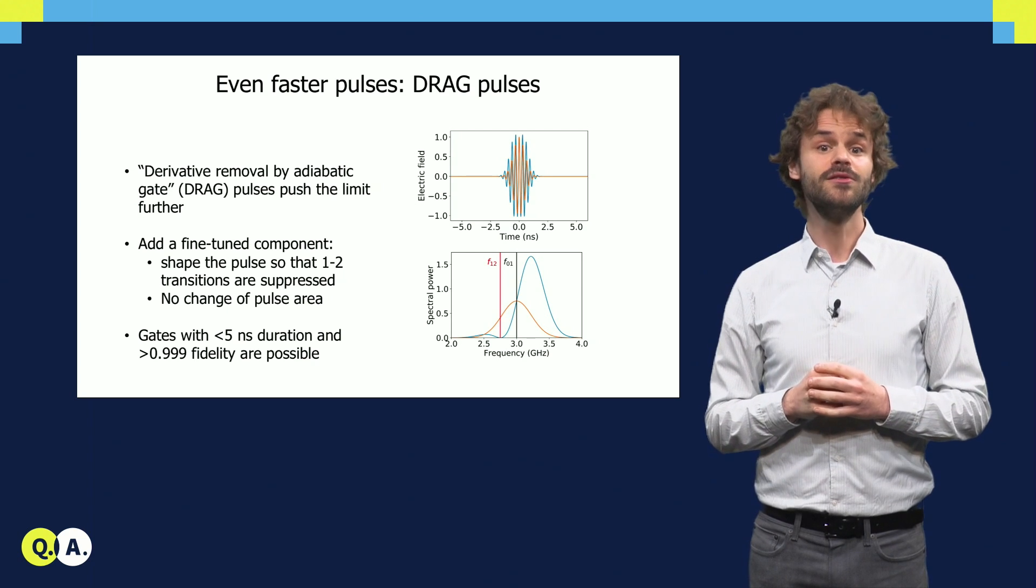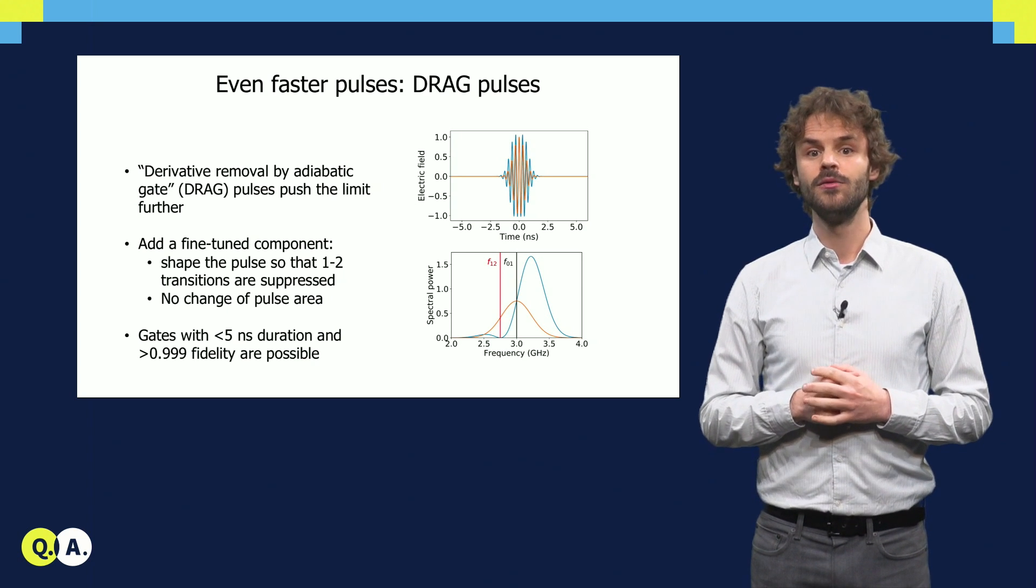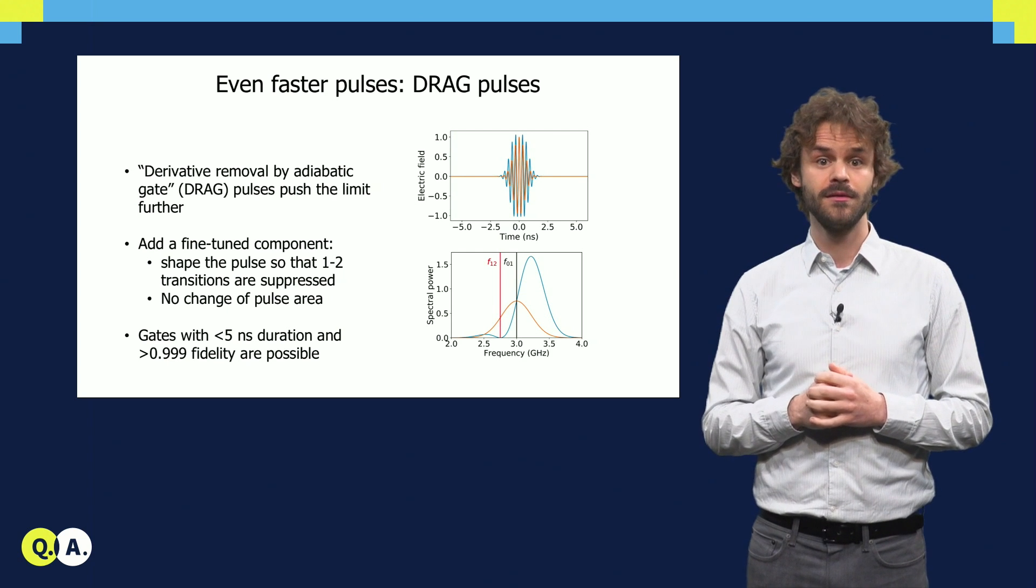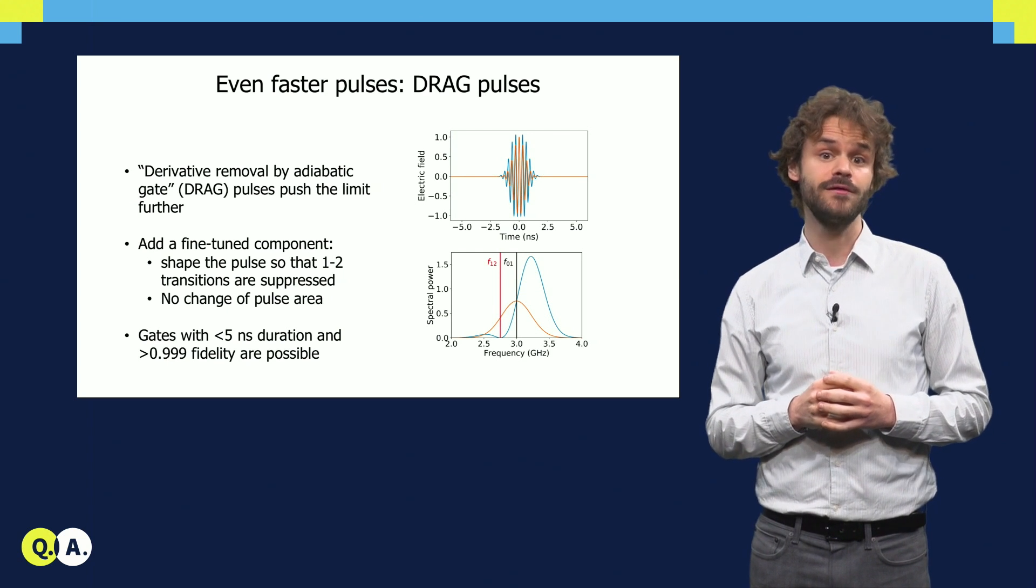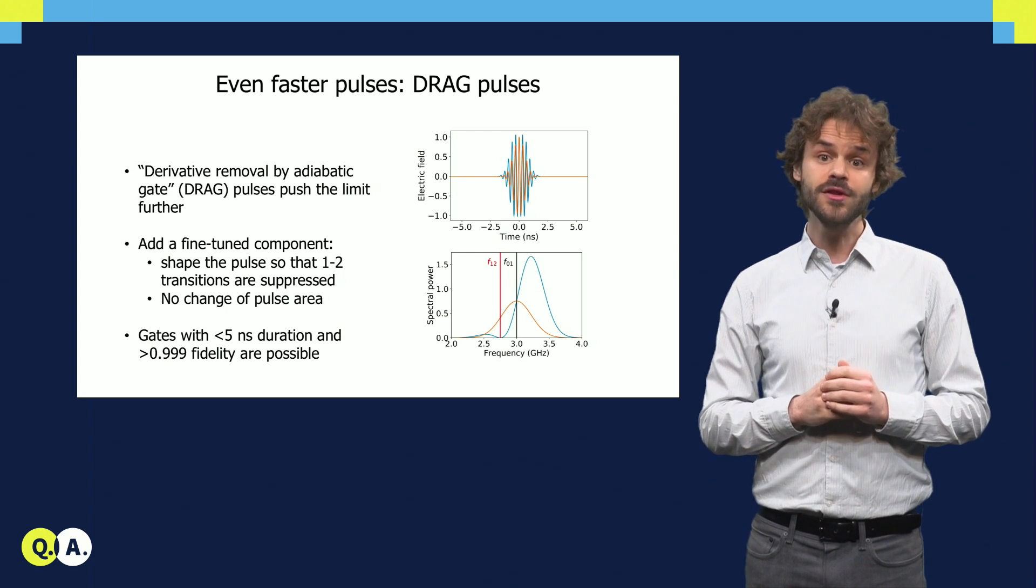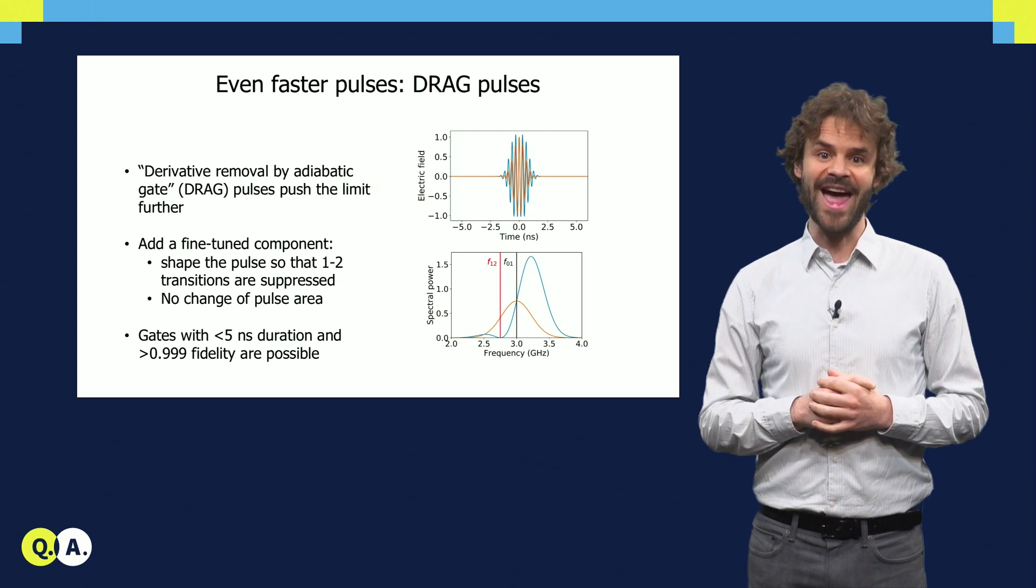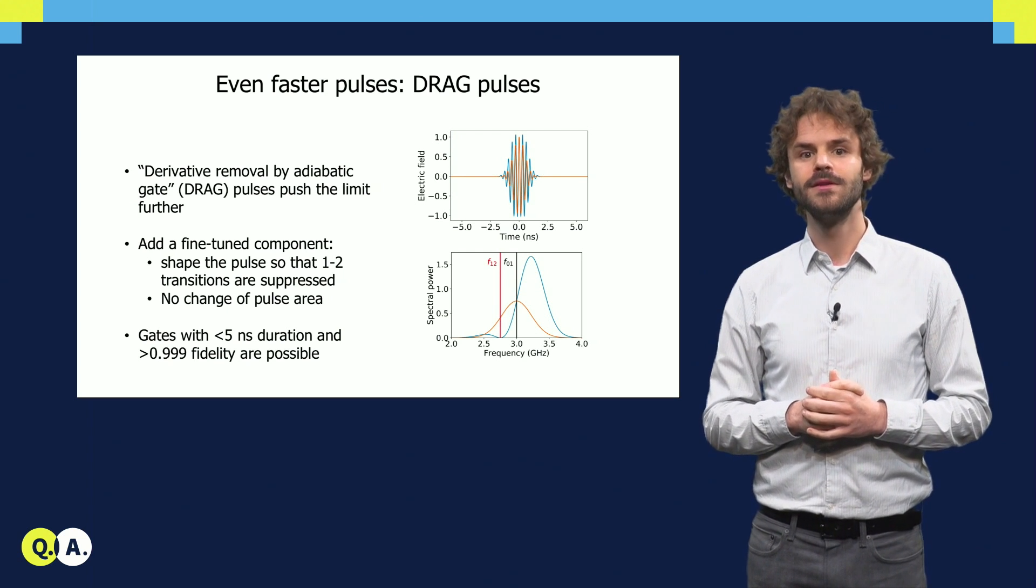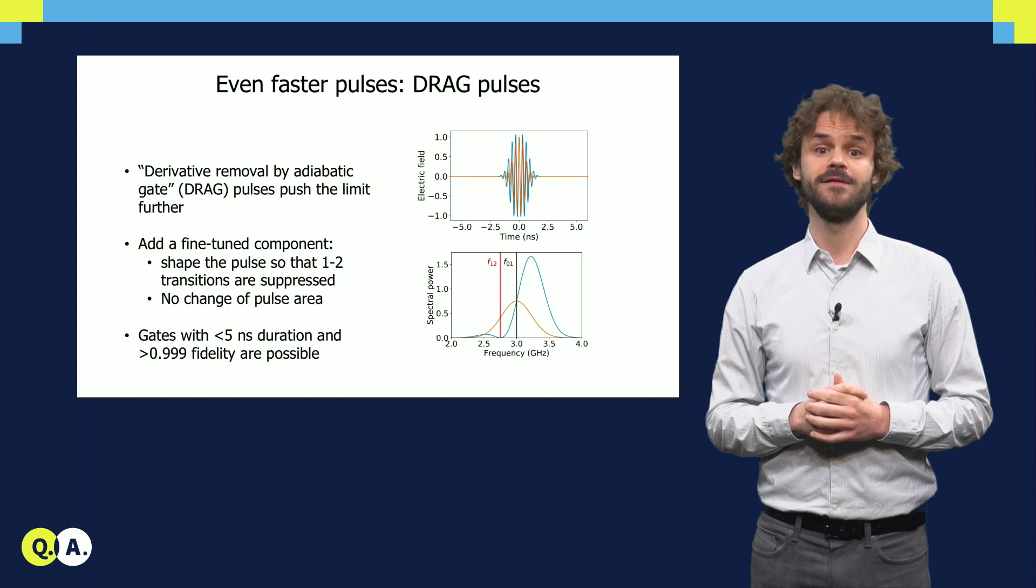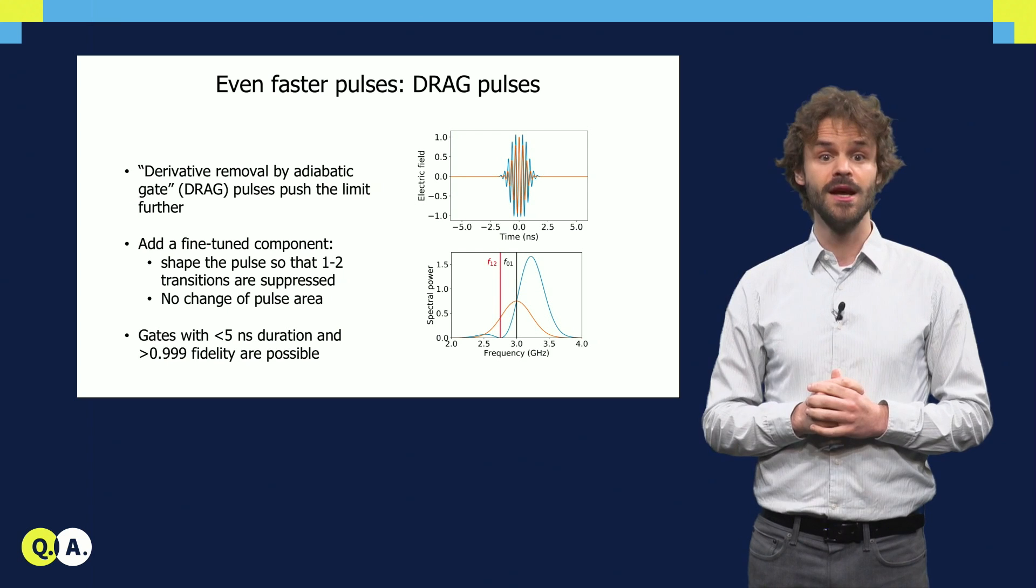Using a technique called derivative removal by adiabatic gate or DRAG, we can push the limit further. By superimposing a fine-tuned out-of-phase component with an envelope proportional to the derivative of the original pulse, the rotation angle is unchanged, but the transitions to the 2-state are actively suppressed. Using this technique, pulse lengths can be reduced to well below 5 nanoseconds without the second transmon state being a concern.